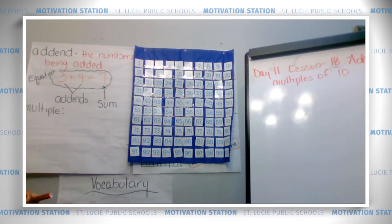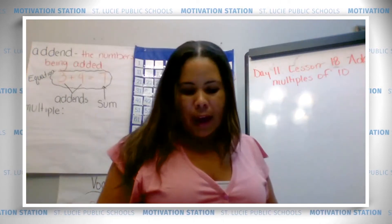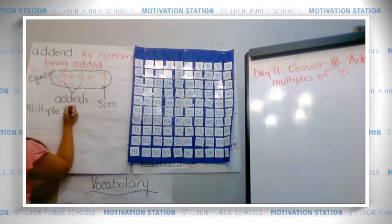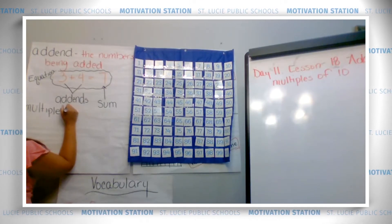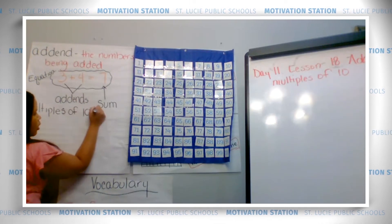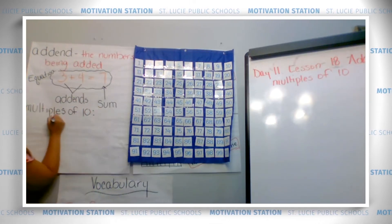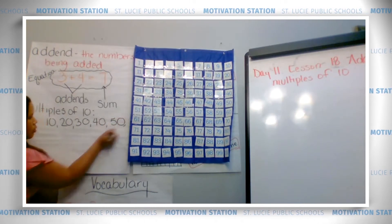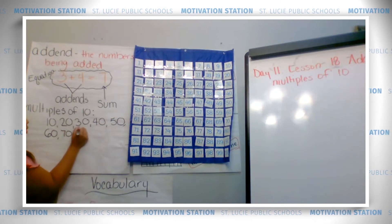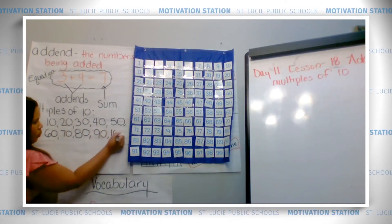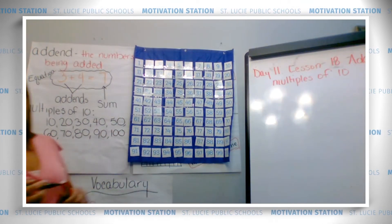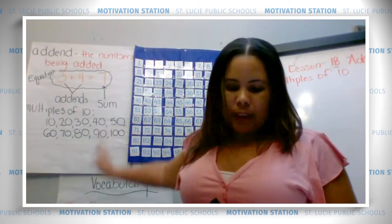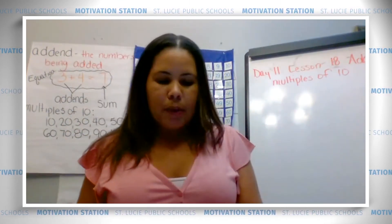Spell it: M-U-L-T-I-P-L-E, multiple. And multiples of 10 are 10, 20, 30, 40, 50, 60, 70, 80, 90, 100 — and we could keep going, but we're stopping at 100. So multiples of 10 are starting at 10 and counting by tens. Add that to your math vocabulary, page 61.